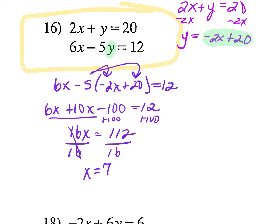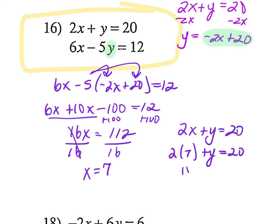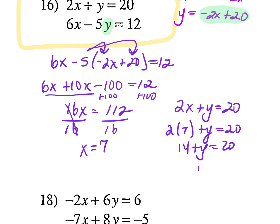Now how do I figure out what y equals? Plug it back in — I'll use the top one: 2x plus y equals 20. 2 times 7 plus y equals 20. 14 plus y equals 20. Subtract 14 from both sides: y equals 6. So I got 7 comma 6.